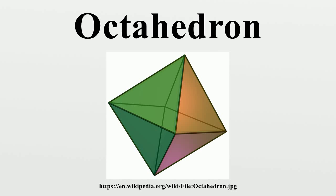Spherical tiling: the octahedron can also be represented as a spherical tiling, and projected onto the plane via a stereographic projection. This projection is conformal, preserving angles but not areas or lengths. Straight lines on the sphere are projected as circular arcs on the plane.